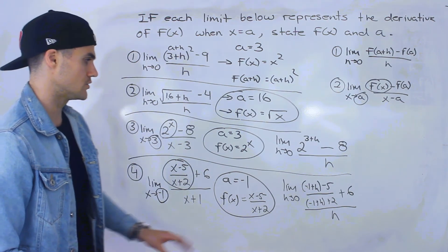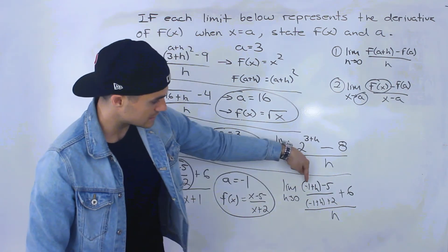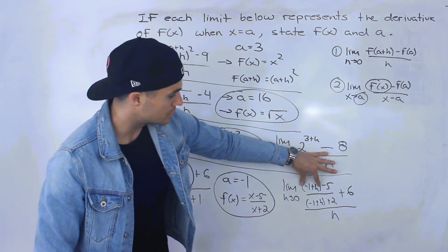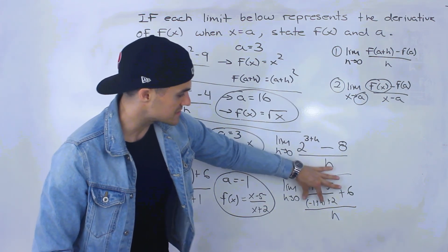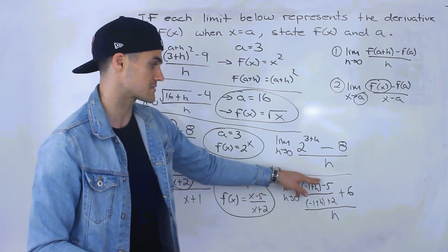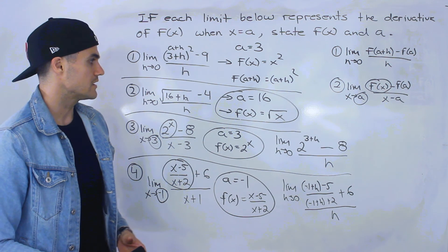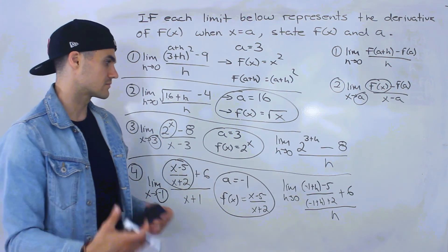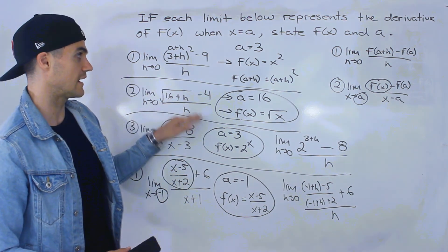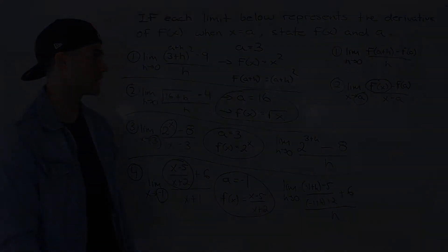Usually the limits will be given in one of these two formats. If it's in the first format, you can spot a+h to identify the a value, then figure out what function was being plugged in. So you're given the limit, go backwards, state the function, and state the a value.